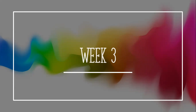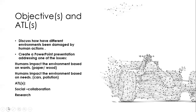During this week, we shall discuss the following. Our first lesson will highlight specific objectives and ATLs. In this lesson, we shall discuss how different environments have been damaged by human actions — essentially, how we are responsible for damaging the environment. We shall reflect on the difference between wants and needs, and how our desires for things that aren't really necessary have impacted the environment.